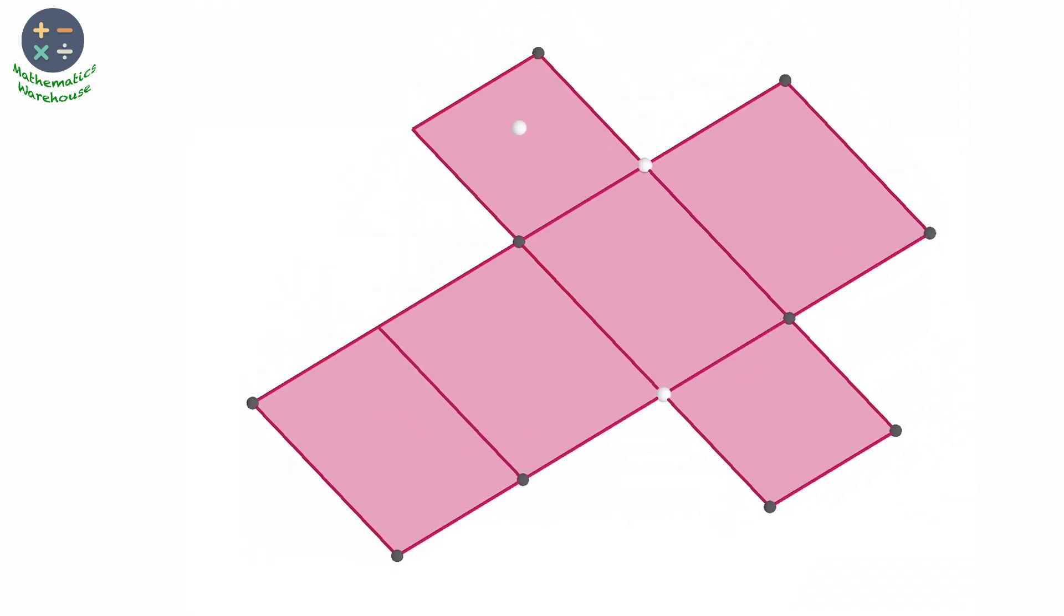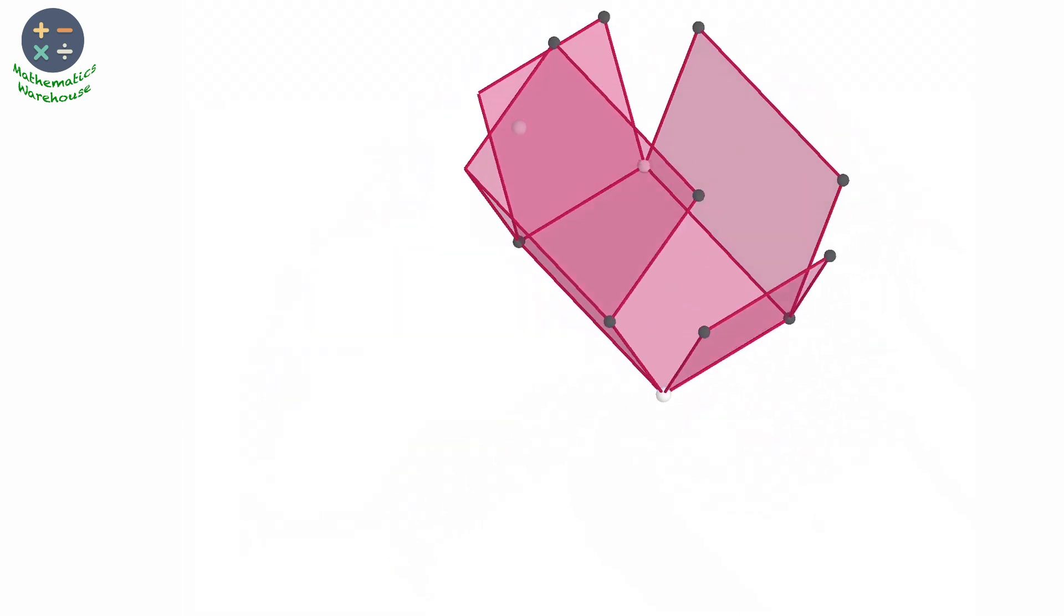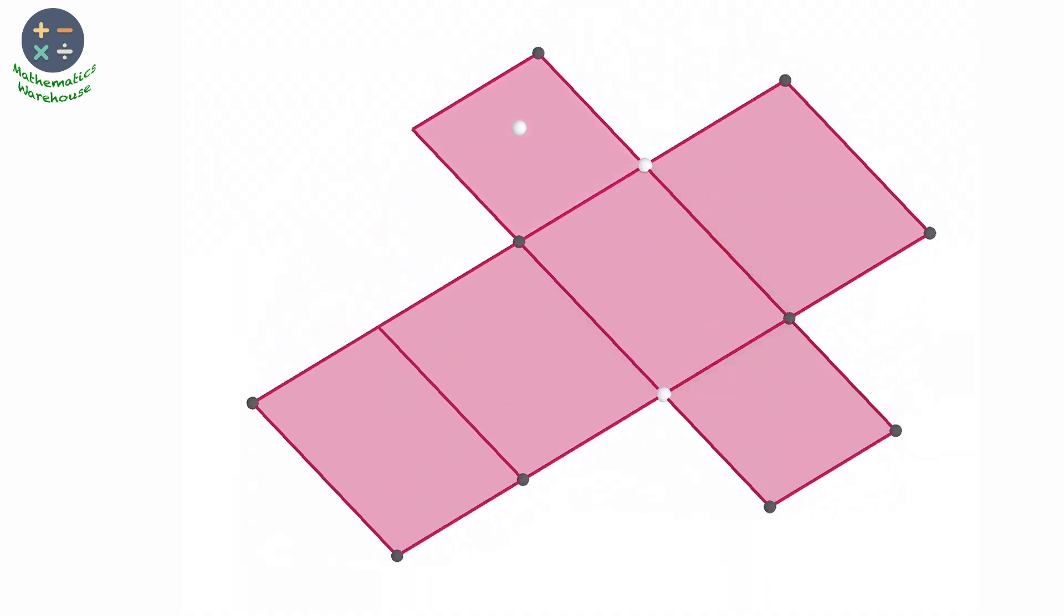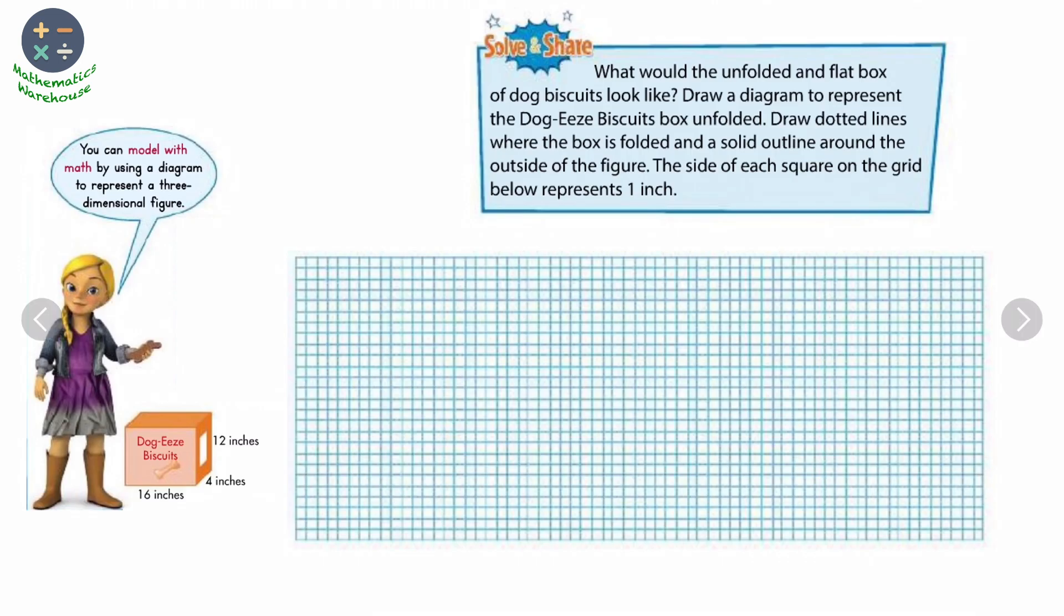So if we unfold this rectangular prism, we would have six faces. Count how many faces we have, six faces. Those faces are rectangles or sometimes we have some squares. So we can unfold this shape, this solid figure, into a planar shape consisting of six faces. Each face is a polygon.